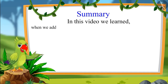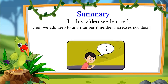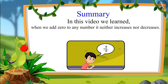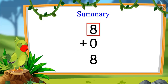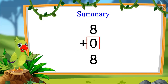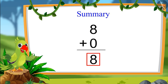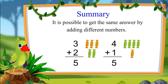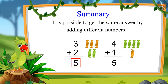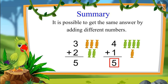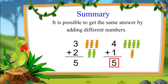So children, in this video we learned that when we add 0 to any number, it neither increases nor decreases. For example, when we added 0 to 8, the total remained 8. We also saw that it is possible to get the same answer by adding different numbers. For example, when we add 3 and 2, we get 5. And when we add 4 and 1, we still get 5. This means that we can get the same answer by adding different numbers.